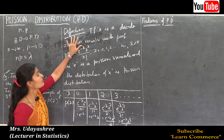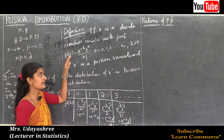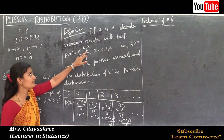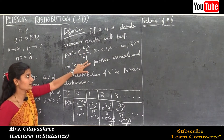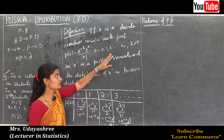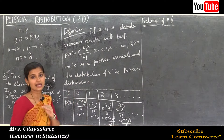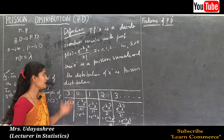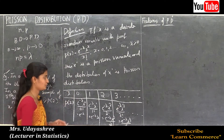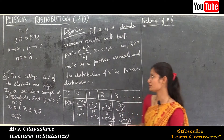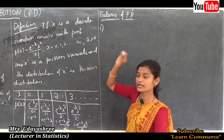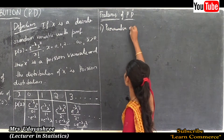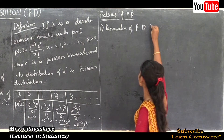The definition of Poisson distribution is: if x is a discrete random variable with probability mass function P(x) = e^(−λ) · λ^x / x!, where x takes values 0, 1, 2 up to infinity and lambda is always positive, then x is a Poisson variate and the distribution of x is Poisson distribution. Now let us see the features of Poisson distribution.